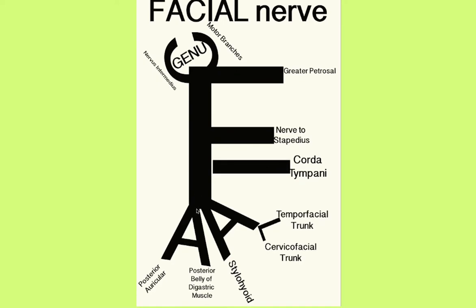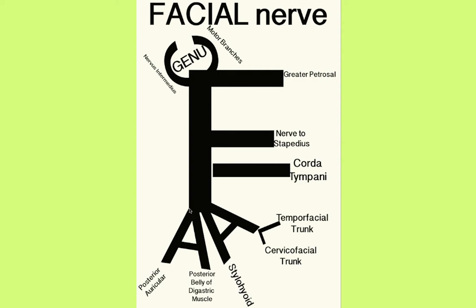And then you have the terminal branches down here, the most important being the nerves to the facial muscles. Those two basic branches are trunks: the temporal facial trunk and the cervical facial trunk. These give off the temporal, zygomatic, maxillary, buccal, and cervical branches. And so this L here reminds you that those two major trunks give those branches.